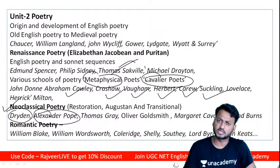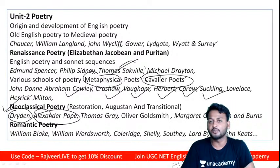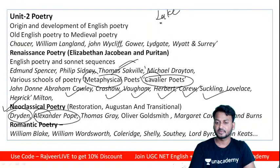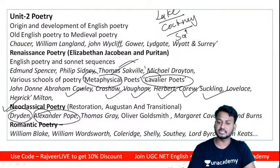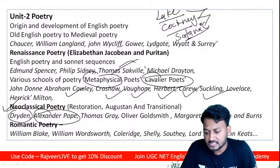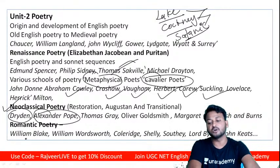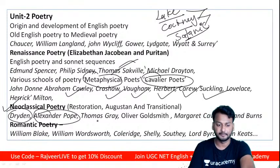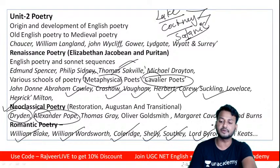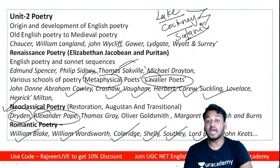In Romantic poetry, understand three major schools: the Lake School of Poets, the Cockney School, and a third group. Major Romantic poets include William Blake, William Wordsworth, Samuel Taylor Coleridge, P.B. Shelley, Robert Southey, Lord Byron, and John Keats. Every single UGC NET exam will have questions based on these particular authors.